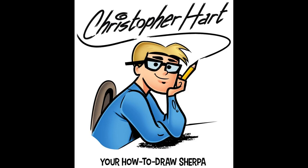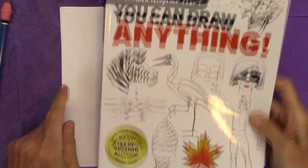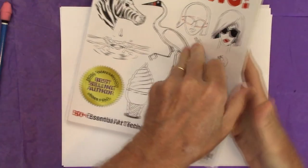Hi, my name is Christopher Hart. I'm a cartoonist, author of many books on drawing cartoons and all sorts of stuff, including my newest one, You Can Draw Anything: 50 Essential Art Techniques for the Aspiring Artist.